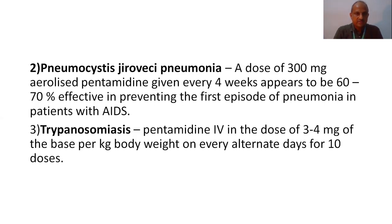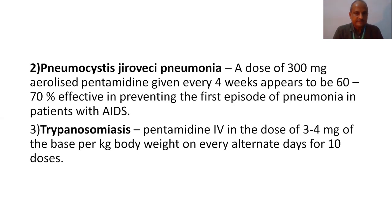Coming to the therapeutic uses: pentamidine is useful in visceral and mucocutaneous leishmaniasis cases that are resistant to pentavalent antimony compounds — that is stibogluconate. In resistant cases, pentamidine is useful. These are also treated with pentamidine or in combination with amphotericin B. One more condition: Pneumocystis carinii pneumonia — in the lung — the dose is 300 mg in the form of aerosolization every four weeks. It appears to be 70% effective in preventing the first episode of pneumonia in patients with acquired immunodeficiency syndrome. For trypanosomiasis, pentamidine is given intravenously in the dose of 3 to 4 mg of the base per kg body weight on every alternate day for 10 doses.